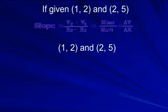If we're given points (1, 2) and (2, 5), we need to figure out our slope. So we're going to use this formula given, y2 minus y1 over x2 minus x1. If you want to label your points you can, this is x1, y1, x2, y2.